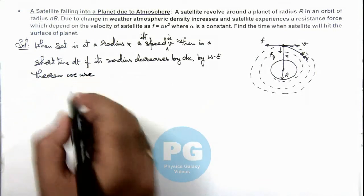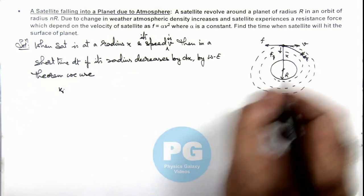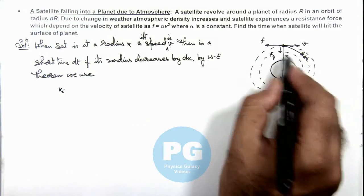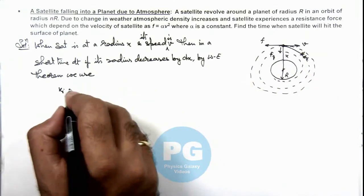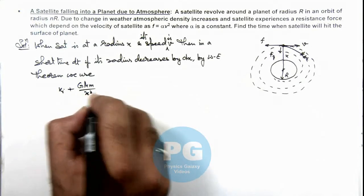The work will be done by gravitational force which can be written as plus GMm/x² multiplied by dx, and since x is decreasing here, dx can be taken negative.